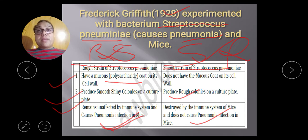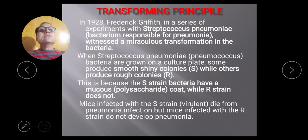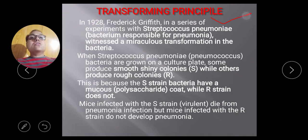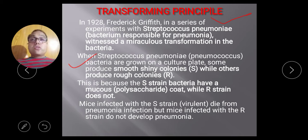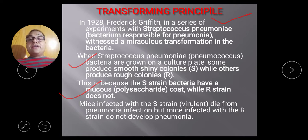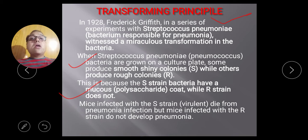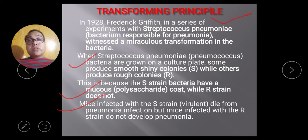The S strain is pathogenic, it is also called virulent, and the R strain is non-pathogenic, it is called non-virulent. Mice infected with S strain die because S strain is virulent. R strain does not cause pneumonia because there is no capsule on the cell wall of the bacteria.